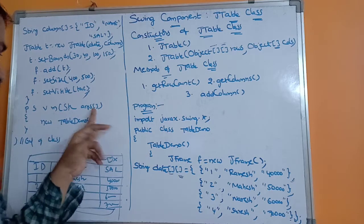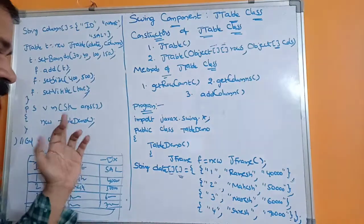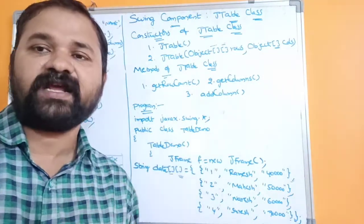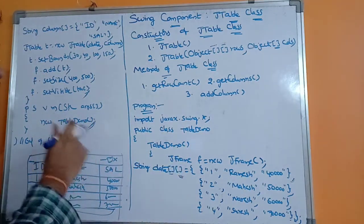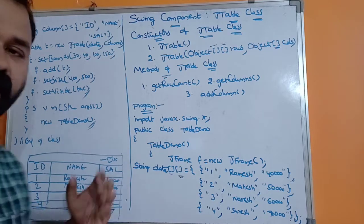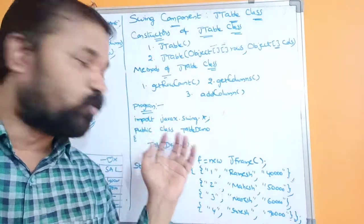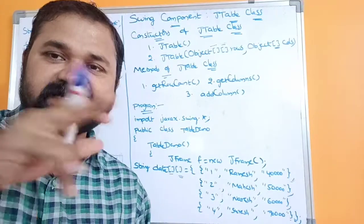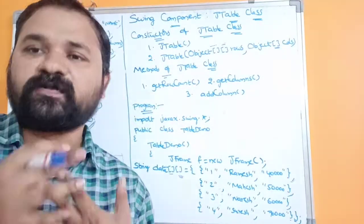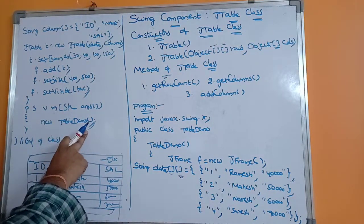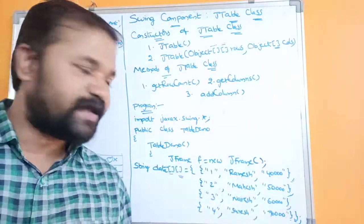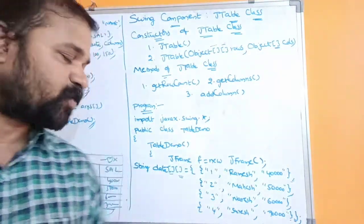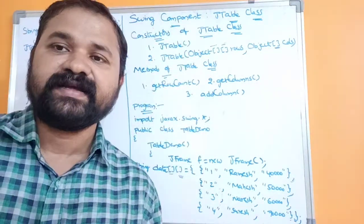In the main method, execution starts and we call the constructor by creating an object: new TableDemo(). There is no need for a reference variable since we don't need to access the object later. Whenever the object is created, the constructor is called and all statements execute. To run the program, use: java TableDemo.java. The output will display the JTable with the employee data.